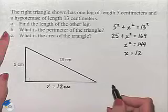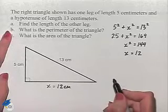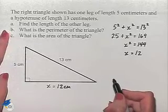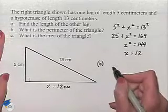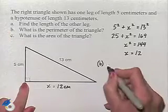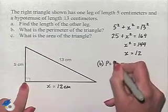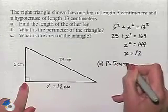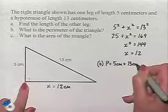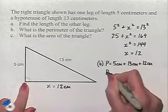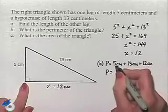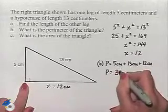That allows us to do Part B, which is to find the perimeter of the triangle. The perimeter means the distance around. So in Part B, we're simply going to add up the lengths of the sides. That's going to be 5 centimeters plus 13 centimeters plus 12 centimeters. And we have 13 plus 12 is 25, plus 5 is going to be 30 centimeters.